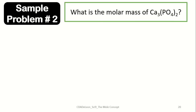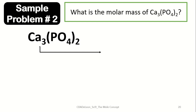For another problem, let's get the molar mass of calcium phosphate. Calcium has three atoms, so three atoms of calcium multiplied by its atomic mass of 40.08 is equivalent to 120.24. Phosphorus and oxygen will have a different number of atoms since the compound has a subscript of two.